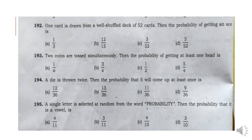Question 192: One card is drawn from a well-shuffled deck of 52 cards. Then the probability of getting an ace is 1 by 13. The official answer is 3 by 4. Option B: 3 by 4.